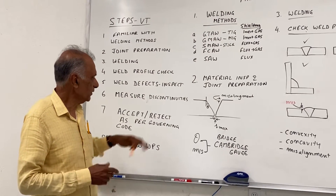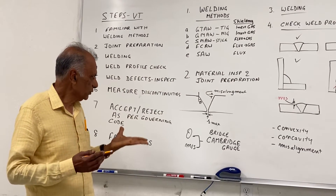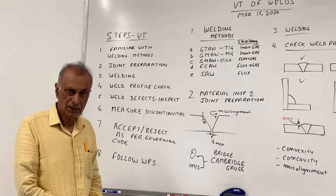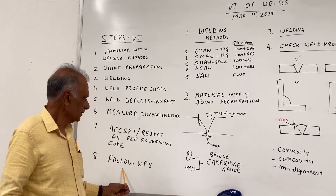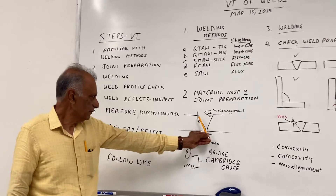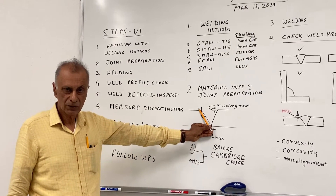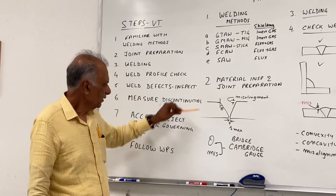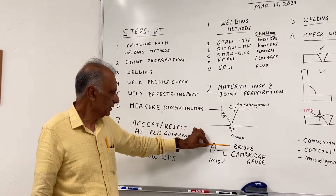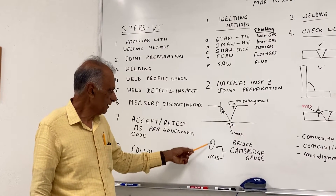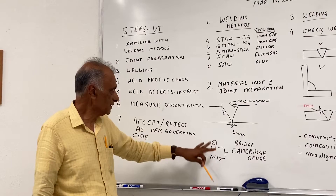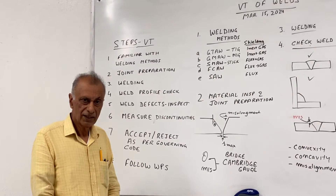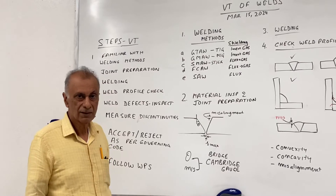Once we are familiar with the welding methods, we start the welding process. The first step is joint preparation. The visual inspector has to check the bevel angle as per the WPS. So if the WPS says 30 degrees, we have to make sure it's 30 degrees — there could be a tolerance of plus or minus 2 degrees. We also check for root opening, maximum root opening, and misalignment. All these can be checked using what's called the bridge cam gauge, which checks the angle theta and the misalignment. When that's done, we start the welding process. The VT inspector should be present where the welding is going on to make sure everything is proceeding as per the WPS.